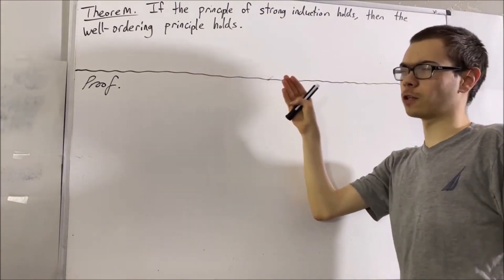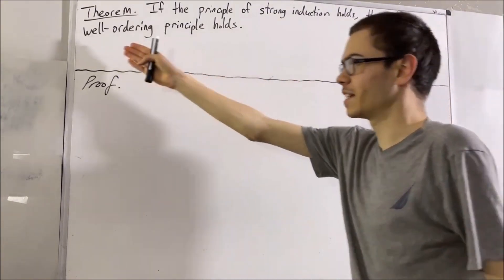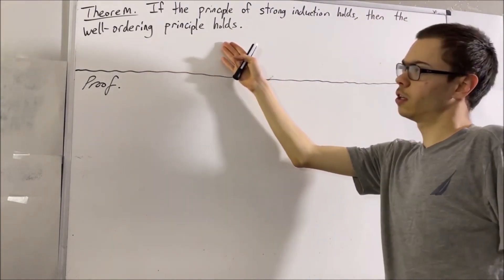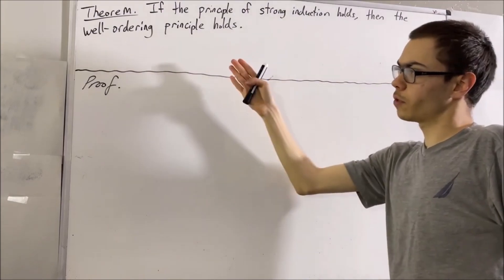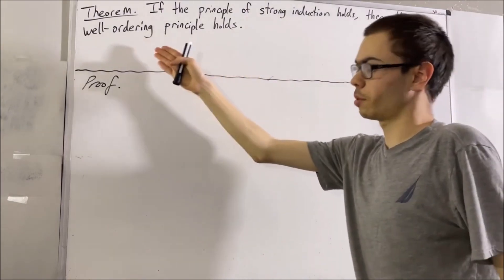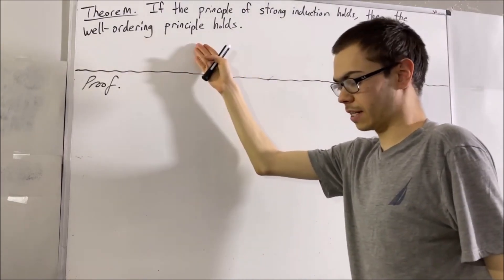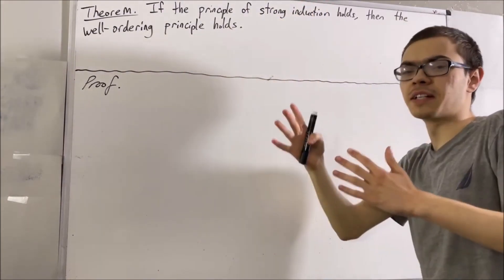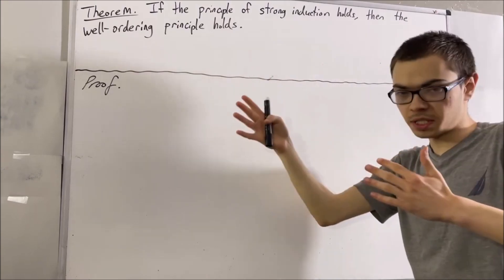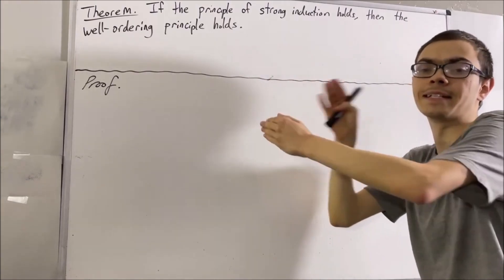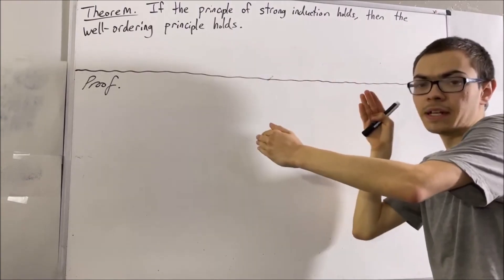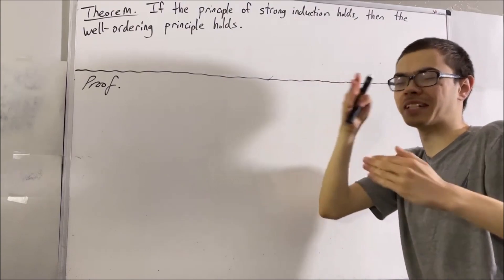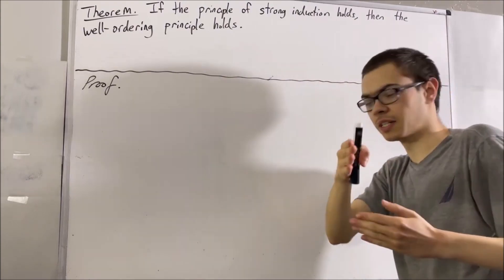So first of all, what is the well-ordering principle? The well-ordering principle states that for every subset of the natural numbers, if that subset is not empty, then that subset has a smallest element.